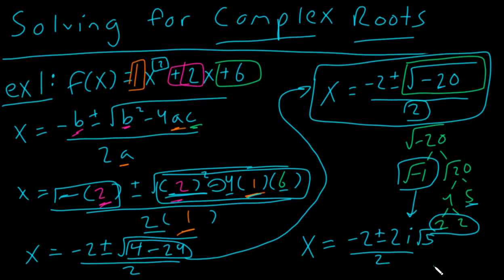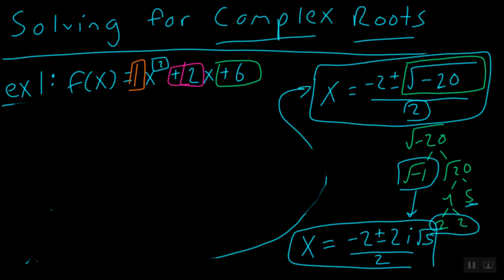Now, this is not the final answer. But I do need to clean this up just a little bit. So please pause the video, finish taking any notes that you need. So here, remember we have x equals negative 2 plus or minus 2i square roots of 5 all over 2.